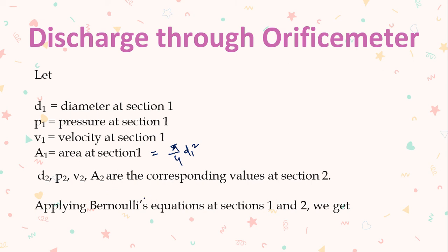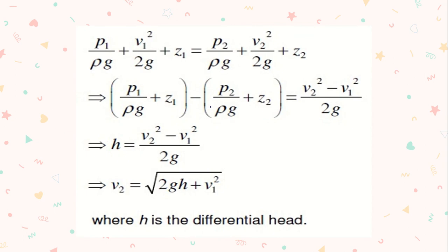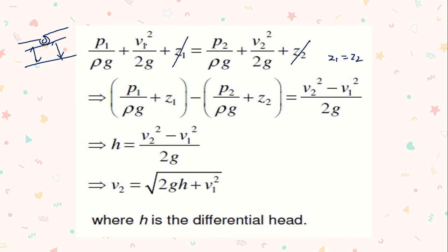Since the orifice meter is an application of Bernoulli's theorem, we apply Bernoulli's equation at both sections: P1/ρg + V1²/2g + Z1 = P2/ρg + V2²/2g + Z2. Since the pipe is horizontal, sections 1 and 2 are at the same height, so Z1 = Z2. These terms cancel, simplifying the equation to: P1/ρg + V1²/2g = P2/ρg + V2²/2g.